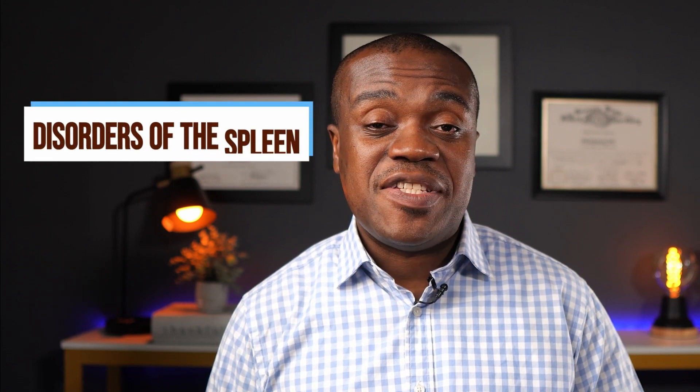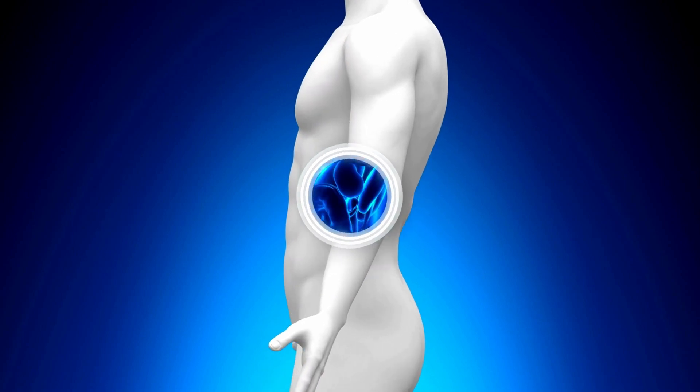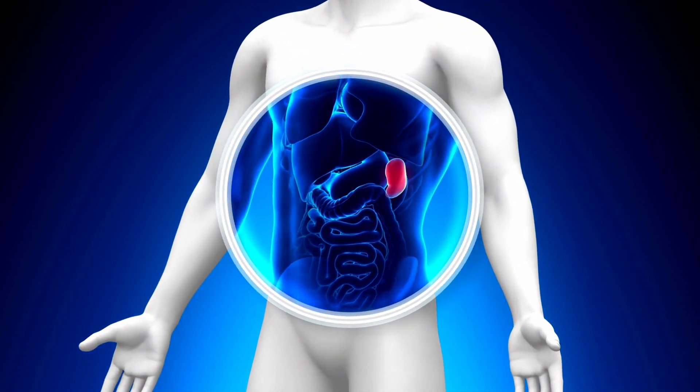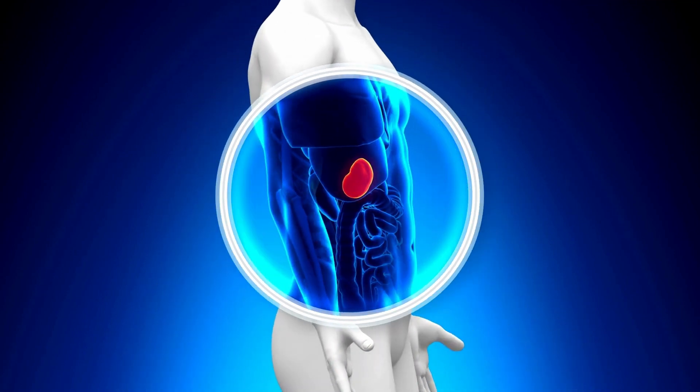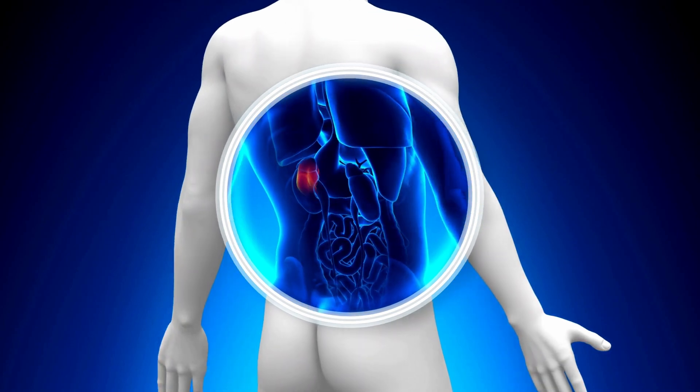The third reason for a falsely high A1C is disorders of the spleen or spleen surgery. The spleen is a small organ located in the left ribcage right above the stomach. Among its many functions, one is to remove old red blood cells. If anything limits the spleen from doing this — such as sickle cell disease or having part of the spleen surgically removed — this function becomes compromised. The old red blood cells stay longer, attach to more glucose, and give you a falsely high A1C level.